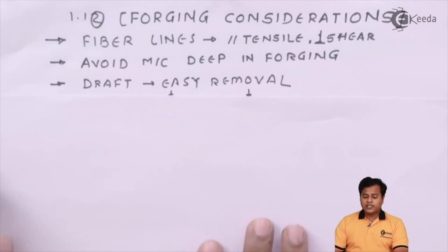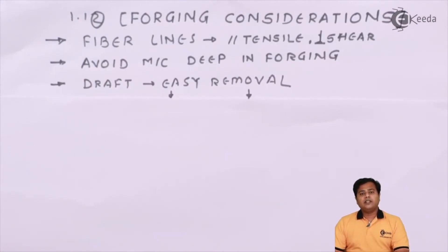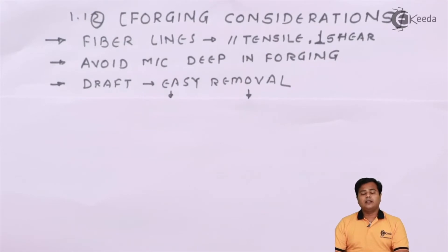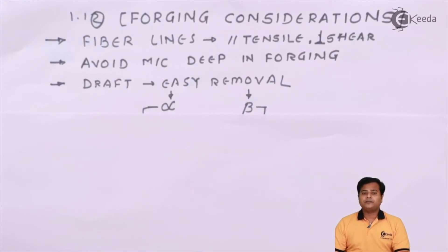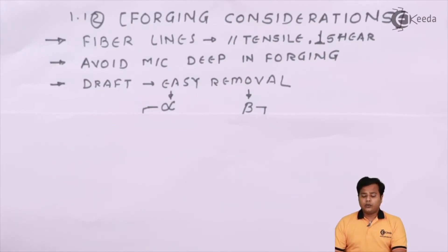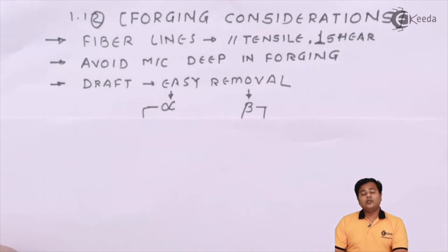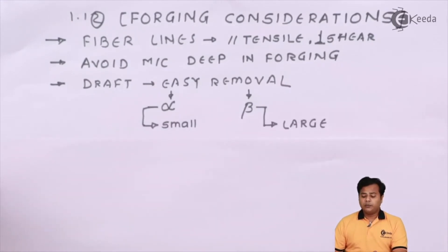The third consideration is the draft angle. The draft angle is used to make removal of the forged part easy. There are two types of draft angles: the outer draft angle designated by alpha and the inner draft angle designated by beta. When the material cools from the outside, the outer draft angle alpha should be as small as possible. When the material cools from inside to the outer side, the inner draft angle beta should be larger. So beta should be larger and alpha should be smaller in the respective cases.